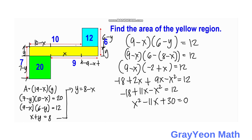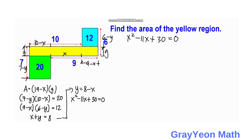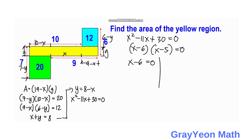We solve the resulting quadratic equation. Factoring: (x minus 6)(x minus 5) equals 0. This gives two solutions. For x minus 6 equals 0: x equals 6, and since x plus y equals 8, y equals 2. For x minus 5 equals 0: x equals 5, and y equals 3.